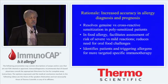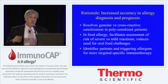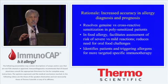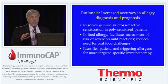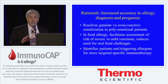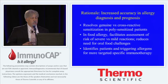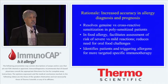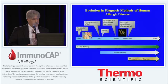The rationale is really to increase the accuracy of allergy diagnosis and prognosis by the use of components. We do this by resolving or distinguishing between genuine and cross-reactive sensitization in polysensitized individuals. In food allergy, it facilitates the assessment in some cases of the risk of severe versus mild reactions, and in doing so, can reduce to some extent the need for oral allergy challenges. In certain cases, it allows you to identify patients and triggering allergens as you plan better targeted immunotherapy.